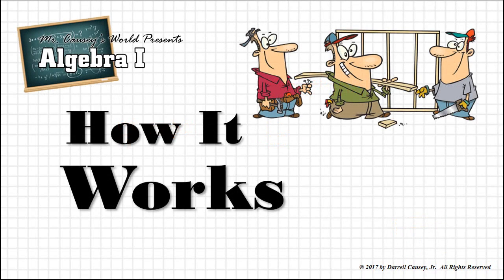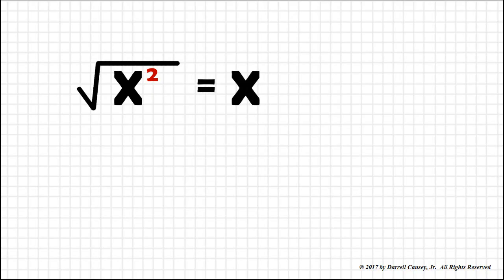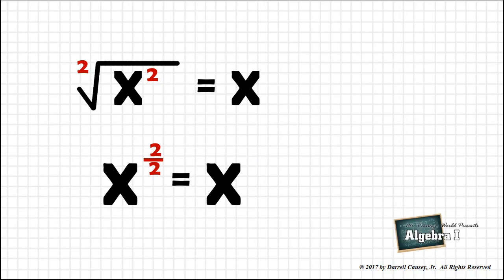How does it all work? We know that the square root of x squared is x, but it can also be written as a rational exponent. Remember that square root actually has a 2 over there, so we can write this as 2 over 2 which reduces to 1, and therefore we have x to the first power which is x.